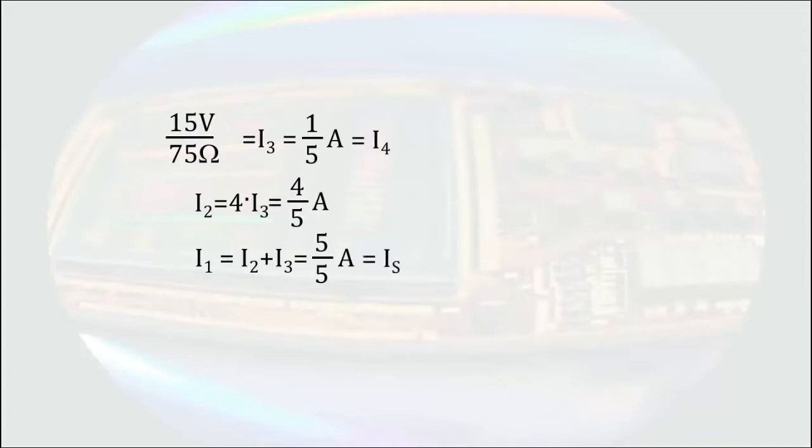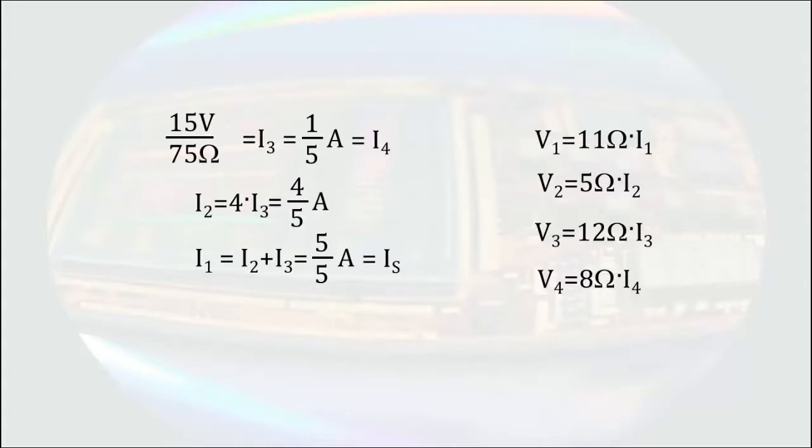We can then substitute these known values into our Ohm's law equations to solve for the four voltages. To make this a little more practical, let's first convert the fractions to decimals. It is then just a matter of multiplication to solve for the four voltages.